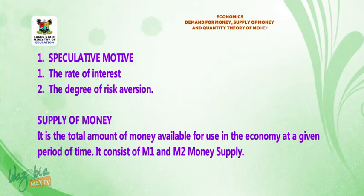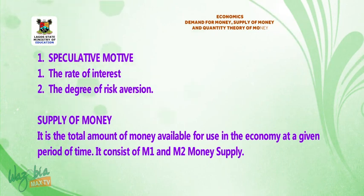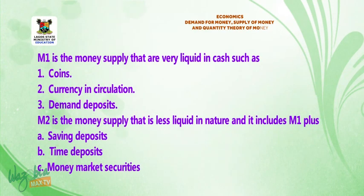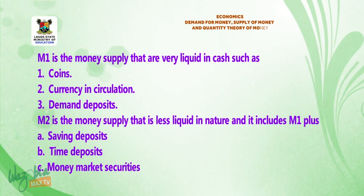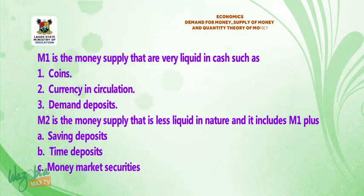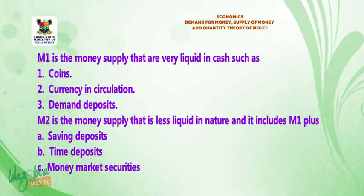Supply of money is the total amount of money available for use in the economy at a given period of time. It consists of M1 and M2 money supply. M1 is the money supply that is very liquid, consisting of coins, currency in circulation, and demand deposits.